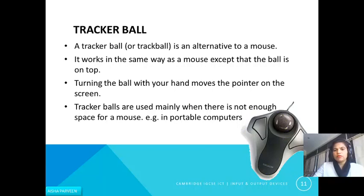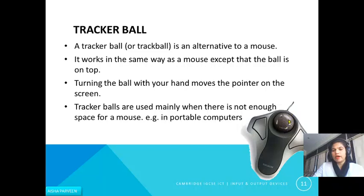The second pointing device is the tracker ball, which is similar to the mouse. The only difference is that the ball is at the top — instead of moving the mouse, you rotate the ball with your finger. It works the same way as a mouse: turning the ball moves the pointer on the screen. Tracker balls are used mainly when there is not enough space for the mouse, for example with portable computers.